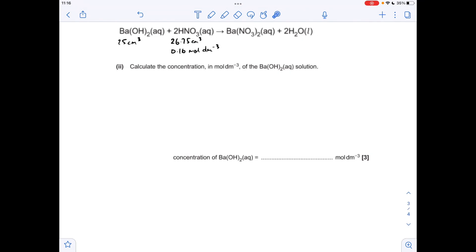And now the calculation. So I've just transferred the relevant information from above to here. So we've got 25 cm cubed of barium hydroxide, it's titrated against the nitric acid which had that concentration and the mean titre came out at that.